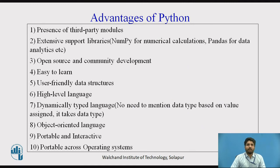We will see what are the advantages of Python. Python has presence of third party modules and extensive support libraries. We use NumPy for numerical calculations, Pandas for data analysis, etc. Python is open source with community development. It is easy to learn, has user friendly data structures, is a high level language, and a dynamically typed language — meaning no need to mention data types; based on the value assigned, it automatically takes the data type. It is object oriented, portable and interactive, and portable across operating systems.